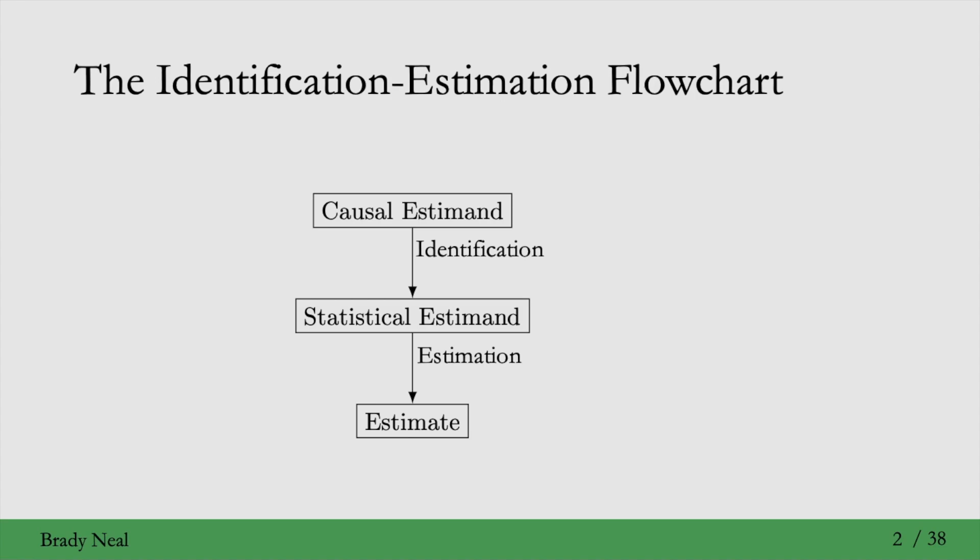But there were a few things missing from this flowchart when we saw it for the first time. For example, we are missing a causal model and data. And, importantly, a causal model will be what we're focusing on in this lecture.